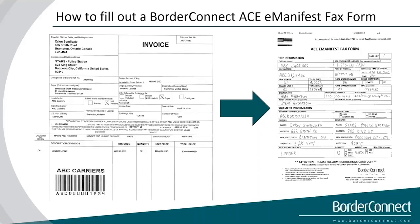For the shipper and consignee, if you look at the customs invoice on the left, for the shipper he used the top left of the invoice — Orion Syndicate — which is where the exporter, shipper, seller, and mailing address is, as you can see on the invoice. For the consignee and mailing address, it's going to California — Stars Police Station. So he's able to know exactly where he's picking up and exactly where the shipment is going, and he entered it correctly.